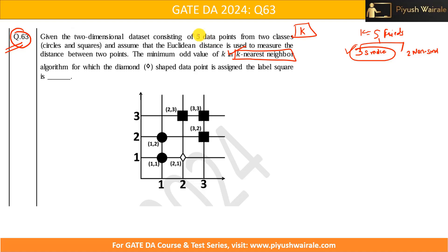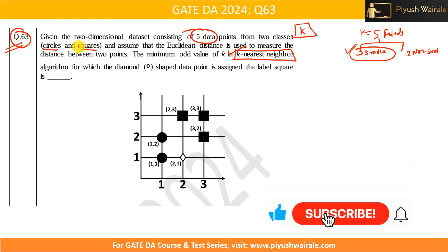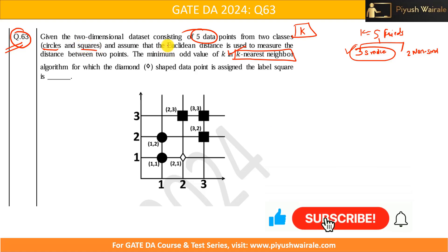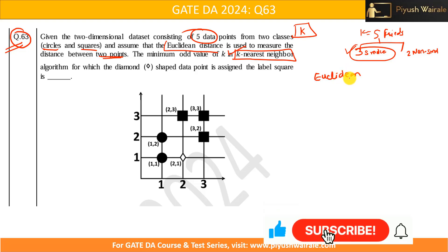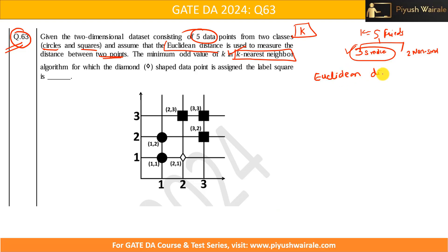The given two-dimensional dataset consists of five data points from two classes: circles and squares. We assume that the Euclidean distance is used to measure the distance between two points.